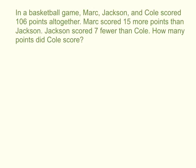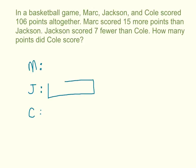The first thing I like to do when solving these is draw a bar model. But I want to start my model with the person who scored the fewest number of points — I want to get the smallest block I can and go from there. Looking at the question, Mark scored 15 more than Jackson, and Jackson scored 7 fewer than Cole, so this tells me that Jackson scored the least of anybody.